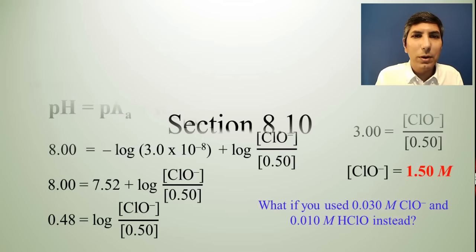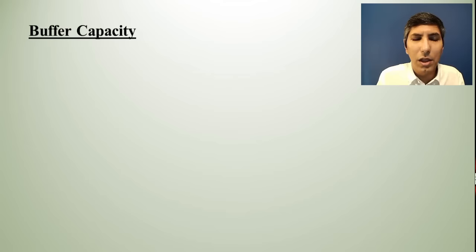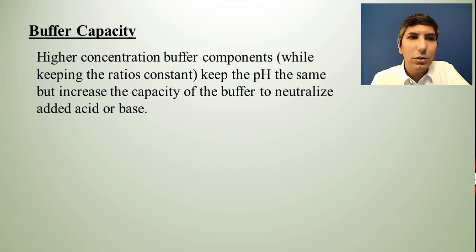And the fact is, the more dilute your solutions are, the less they're going to be able to withstand the addition of acid or base. That's the buffer capacity. So the idea here is that using higher concentration buffer components, like that 1.50 to 0.50, as opposed to 0.03 and 0.01, while keeping the ratios constant, will keep the pH at the same level. But it's going to increase the capacity of that buffer to neutralize added acid or base. So that's why when we're making a buffer, if you really wanted to neutralize a significant amount of added acid or base, you're going to make the concentrations a little bit higher while keeping that ratio the same. Like in our example earlier, it was a 3 to 1.